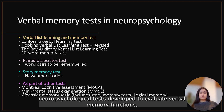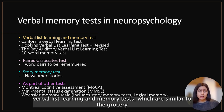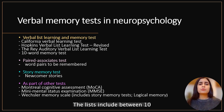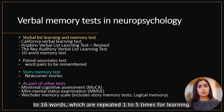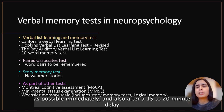There are several neuropsychological tests developed to evaluate verbal memory functions. Verbal list learning and memory tests, which are similar to the grocery list example, are frequently used in the clinic. The lists include between 10 to 16 words, which are repeated one to five times for learning. The test taker has to recall as many words as possible immediately and also after a 15 to 20 minute delay.